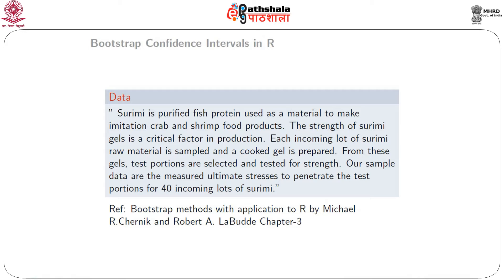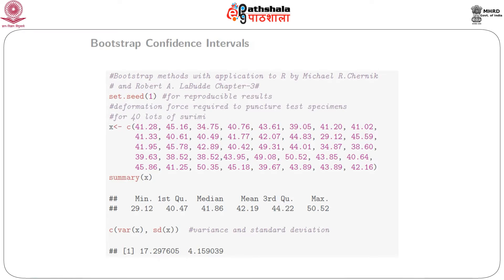Our sample data are the measured ultimate stresses to penetrate the test portions for 40 incoming lots of Surimi. So we have a dataset of length 40 — 40 numerical values reflecting the stress to penetrate test portions. The data is given in the book, starting with 41.28 to 42.16.